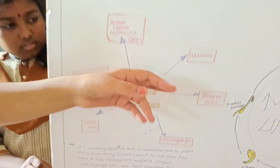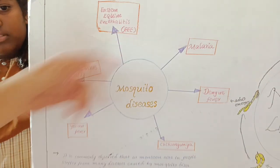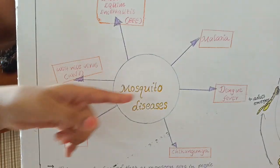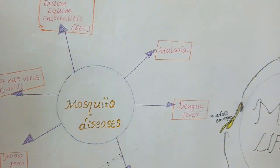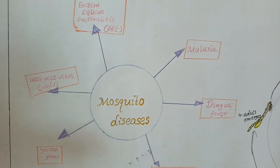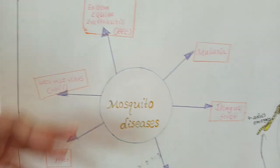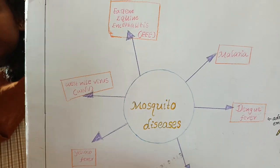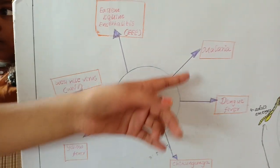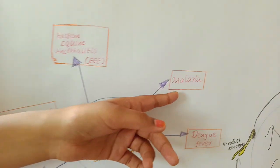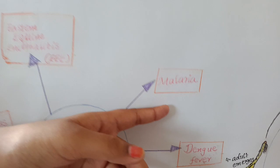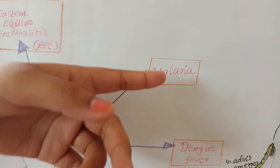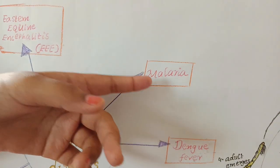Mosquitoes cause malaria. The name of the mosquito that causes malaria is Anopheles. Anopheles mosquito is the dangerous mosquito bite, which according to the WHO causes malaria.